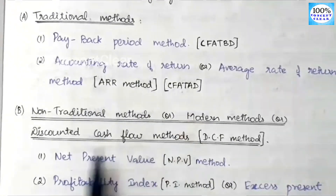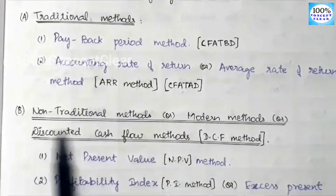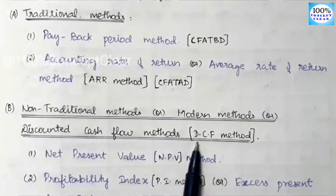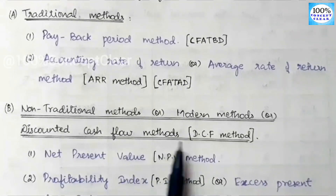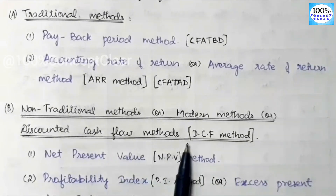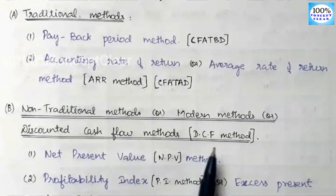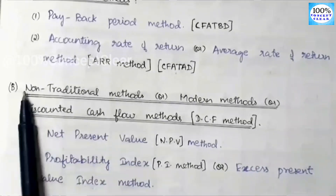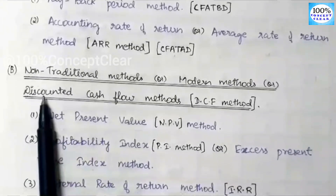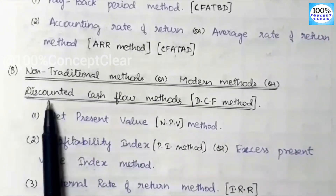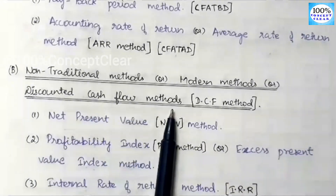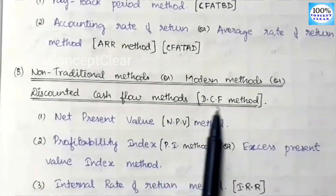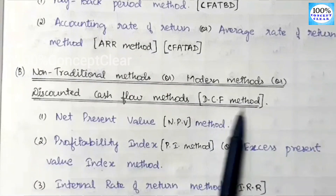In the discounted cash flow method — the DCF method — the first method is the net present value method.